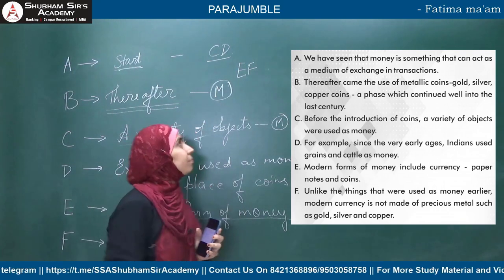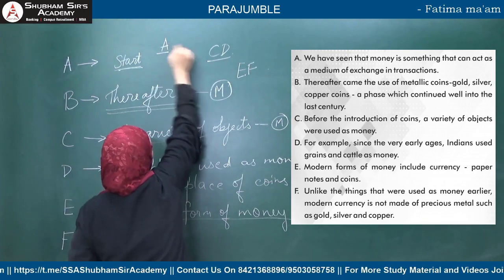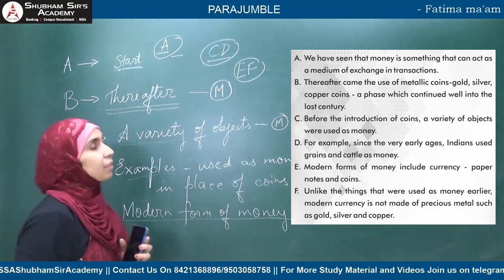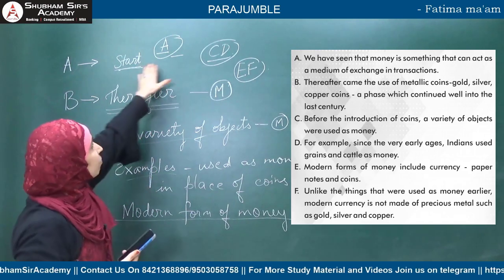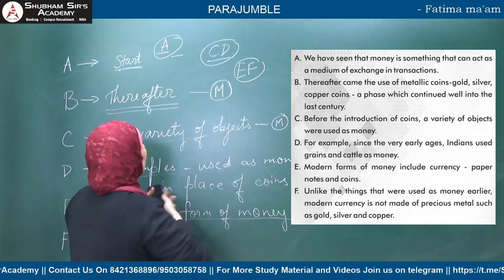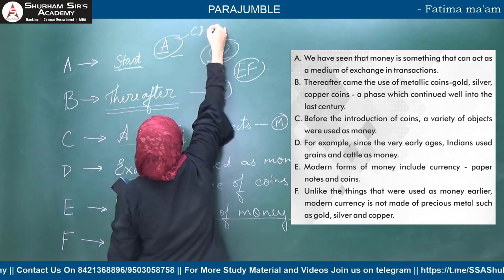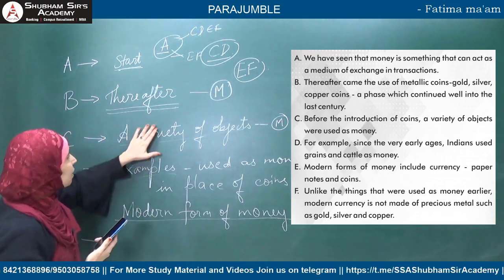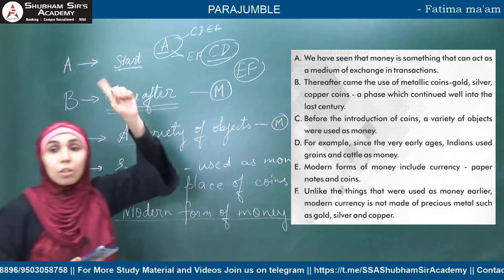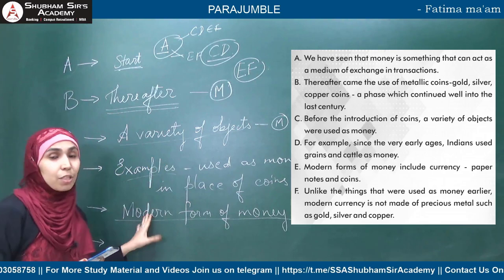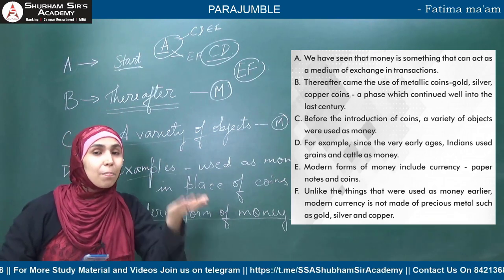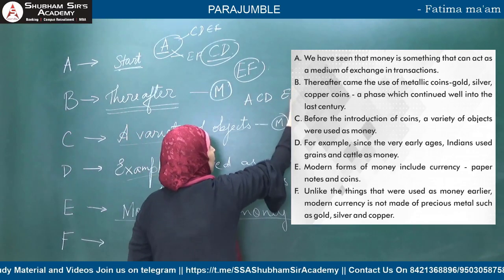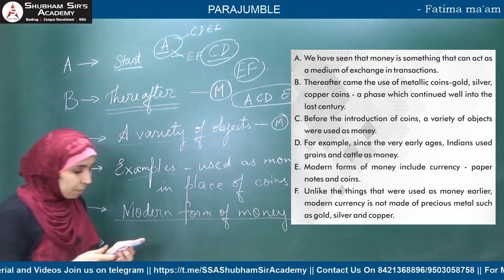So we now have: A is the start; C-D is one pair (past usage); E-F is one pair (modern forms). That leaves B. C and D speak about the past, E and F speak about the present/modern — so the past group comes before the modern group. The sequence so far is A, then C-D, then E-F. Where does B go?